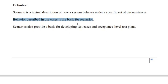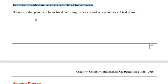Each use case in the use case diagram can be thought of as a scenario. For example, if you consider an ATM machine: withdrawing cash is a scenario, printing a mini statement is a scenario, changing the pin code is a scenario, and transferring funds to another account is a scenario. An ATM machine can be perceived as a collection of scenarios where each scenario allows performing a purpose-specific task. Scenarios not only provide the basis for development, but also help in development of test cases and testing.